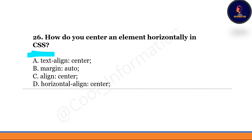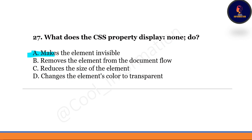Next question: how do you center an element horizontally in CSS? Options include text-align center, margin auto, align center, and horizontal-align center. The correct option is option B — if we set margin to auto, we can center an element horizontally in CSS.